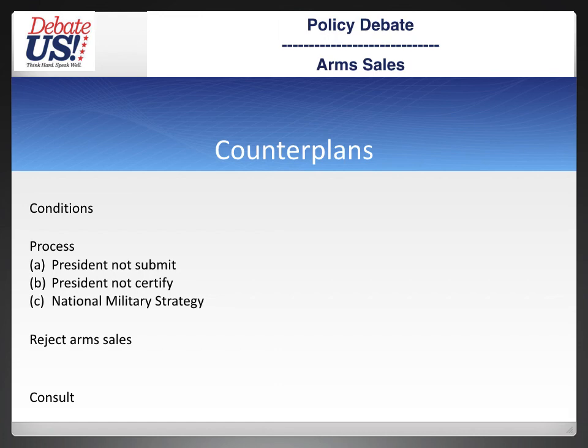I think these are all strong negative arguments that are going to be difficult for the affirmative to beat. You're going to manage this broad topic because on face many cases aren't very good — they won't even have solvency evidence showing that taking away a weapon produces a real advantage. You have conditions counterplans, weaponitis and other underlying conditions critiques, and you can critique their representations from a security, race, or metaphor perspective. There are a lot of strong negative weapons for you to use, so don't be afraid of the breadth of the topic.